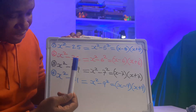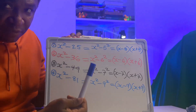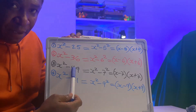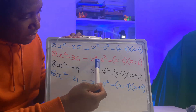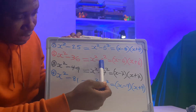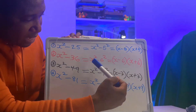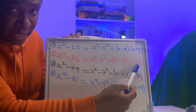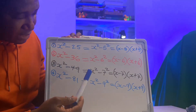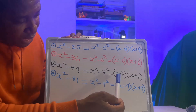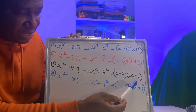In the second one, x squared minus 36: 36 is a perfect square, so we have x squared minus 6 squared. This is difference of two squares, giving (x minus 6)(x plus 6). For the third one, x squared minus 49 is x squared minus 7 squared, giving (x minus 7) in brackets times (x plus 7) in brackets.